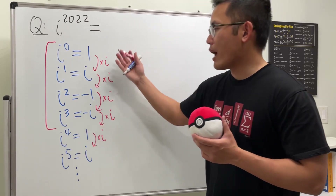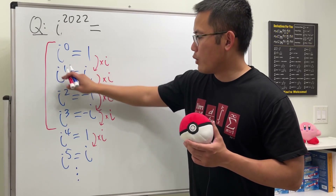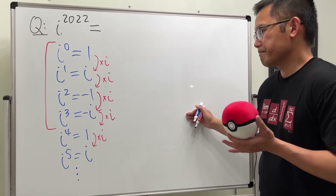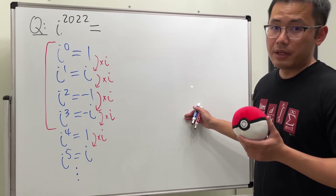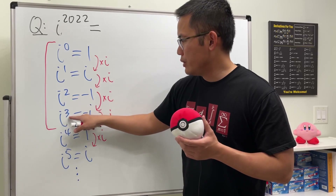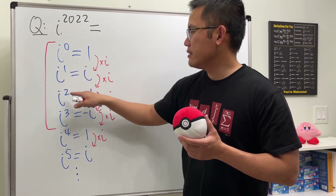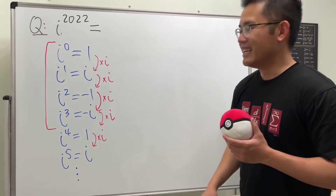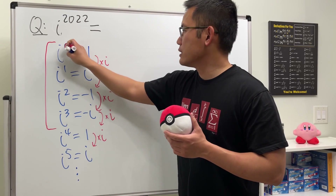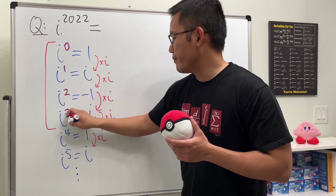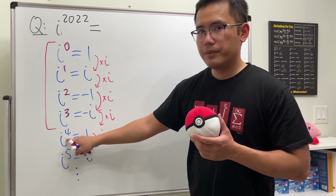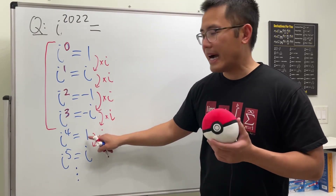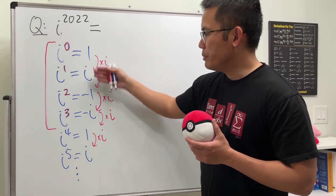We just have to focus on the first four values. Some people show this starting with i to the first power up to i to the fourth power — same thing, I just started with zero. Now, pay attention to the powers: zero, one, two, three, and once we get to four, it's actually the same as the zero power because they have the same output. All we have to do is divide the power by 4, because the pattern repeats every four times.